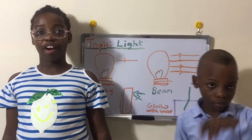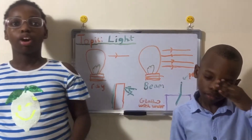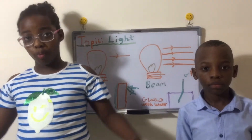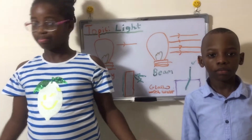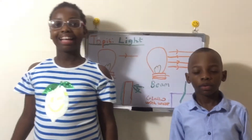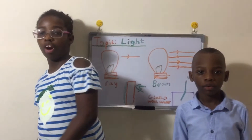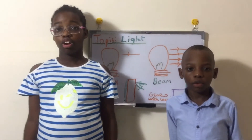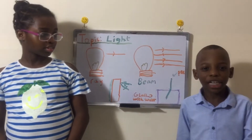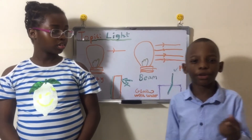Here's a fun fact: white light is not made up of only white. White light is actually made up of all the spectrum colors of the rainbow — red, orange, yellow, green, blue, indigo, violet.